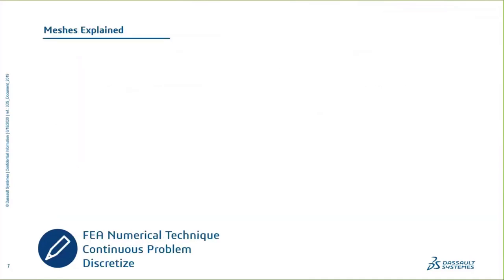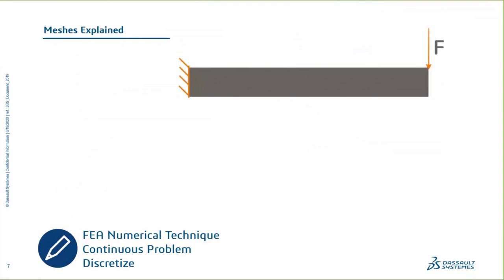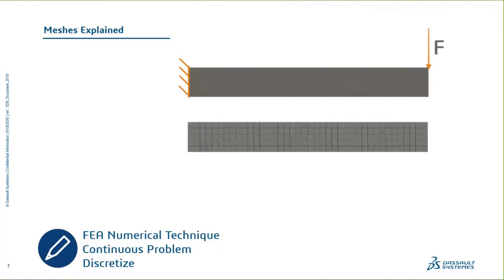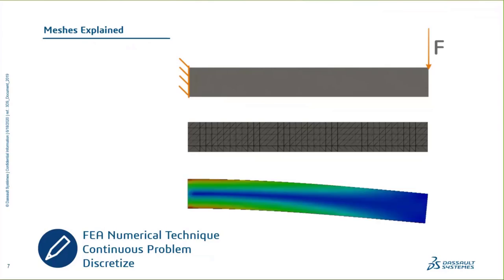Let's talk about meshes and what it means to mesh a model. We have this continuous body — a cantilever beam, fixed on the left with a force on the right-hand side. It's essentially a continuous problem. It's hard to mathematically divide it because we keep dividing it in half. What the mesh does is it discretizes — it breaks up that continuous body and gives the software elements or chunks of that body to solve the mathematical equations over. From there we get outputs like displacement, stress, and strain.